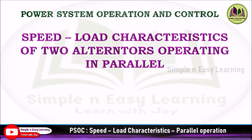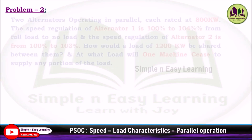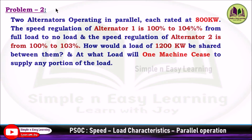Speed load characteristics of two alternators operating in parallel — speed loop characteristics, solved problem 2. Two alternators operating in parallel, each rated at 800 kilowatt. The speed regulation of alternator 1 is 100% to 104% from full load to no load, and the speed regulation of alternator 2 is from 100% to 103%. How would a load of 1200 kilowatt be shared between them? Second: at what load will one machine cease to supply any portion of the load?